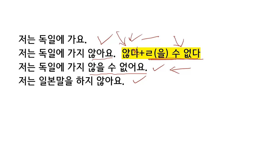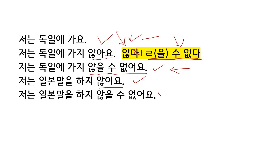저는 일본 말을 하지 않아요. 지 않다 — I don't speak Japanese. Combine 않다 with 을 수 없다: 저는 일본 말을 하지 않을 수 없어요. I cannot not speak Japanese. This means I have no choice but to speak Japanese — I cannot but speak Japanese.